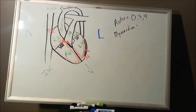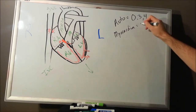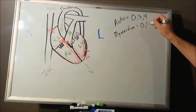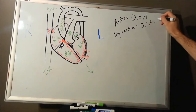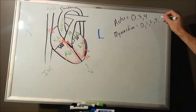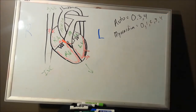Your myocardium is going to have phases 0, 1, 2, 3, and 4 — so five phases. Did not go into math for a reason, but let's take a look at those five phases.